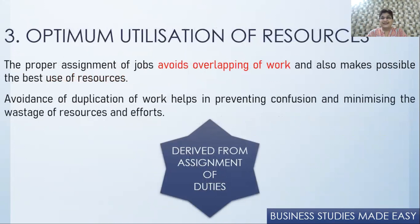The third importance is optimum utilization of resources. When everybody knows what they have to do and there's specialization from doing that work over and over again, they will utilize resources best with no wastage. If Mr. X has been assigned machine number 5, he'll go and work on machine number 5 only. There's no overlapping of work — every task has been divided among people, no work is left undone, and there is no duplication. Therefore this leads to optimum utilization of resources.